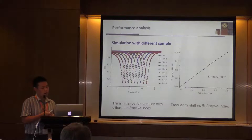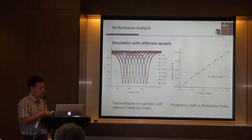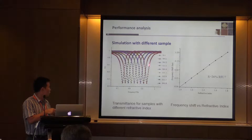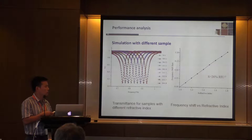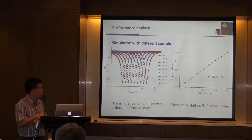After that, we do some simulation work for performance analysis. We change the refractive index of the liquid samples and simulate the transmittance curves. We change the refractive index from 1 to 1.8 and then get the frequency shift. After that, we calculate the frequency shift rate using the refractive index, and we get the sensitivity of about 26% per refractive index unit.